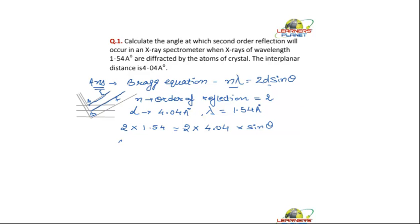So what will be theta equal to? Theta will be equal to sin inverse, and 2 into 1.54 divided by 2 into 4.04. Now just solve this. So we are having theta is equal to sin inverse. So it is 1.54 divided by 4.04, and this will give you 0.38.